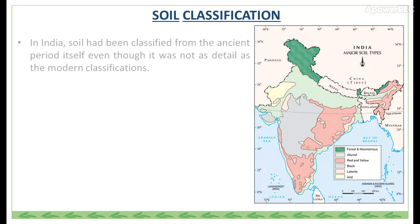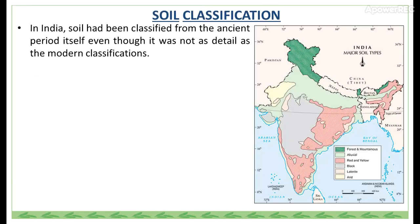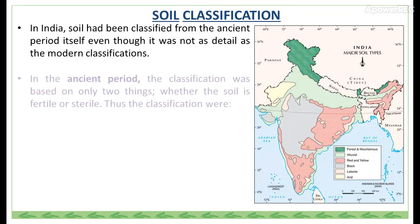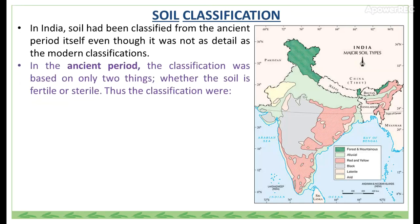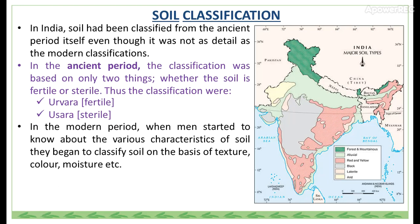Regarding soil classification in India, soil had been classified from the ancient period itself, even though it was not as detailed as modern classification. In the ancient period, classification was based on only two things: whether the soil is fertile or sterile. Thus the classifications were 'Urvara' meaning fertile, and 'Uzra' meaning sterile or non-fertile.